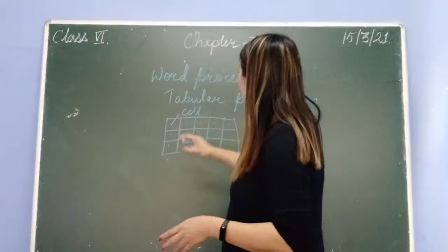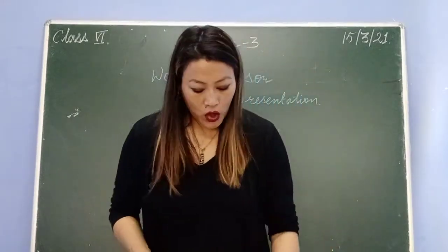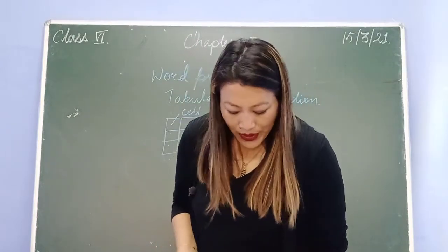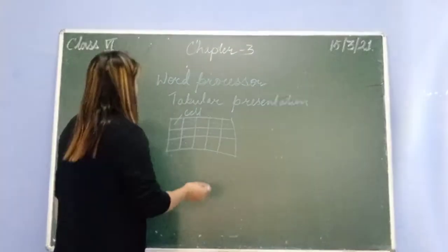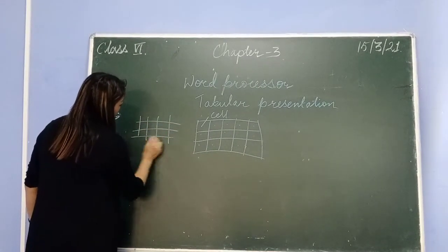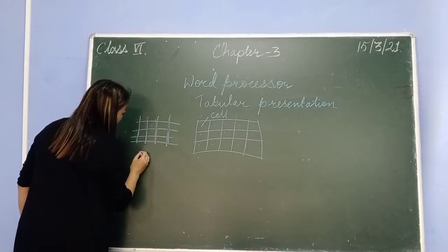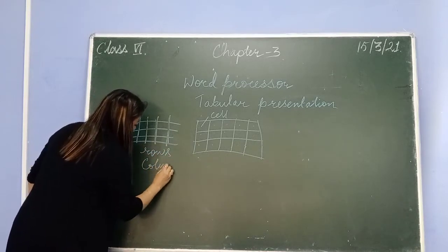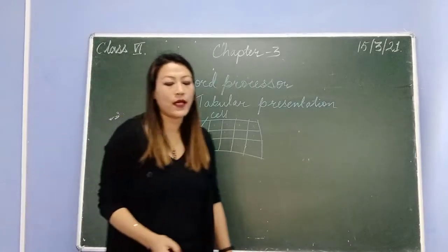We need this kind of table to organize our data in a document. A series of vertical cells is known as a column, whereas a series of horizontal cells is known as a row. Horizontal lines and vertical lines — the intersections of rows and columns — make a table.